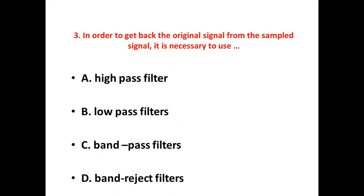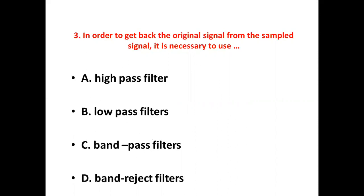Third bit. In order to get back the original signal from the sampled signal, it is necessary to use dash. Option A: High pass filter. Option B: Low pass filters. Option C: Band pass filters. Option D: Band reject filters. Answer: Option B, Low pass filters.